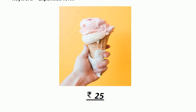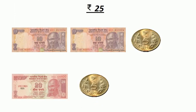What can you see in this picture? It is an ice cream. If you want to buy an ice cream, you have to pay some amount. The cost of this ice cream is Rs. 25. To buy this ice cream, you have to pay the amount 25. The number 25 has 2 tens and 5 ones in it.